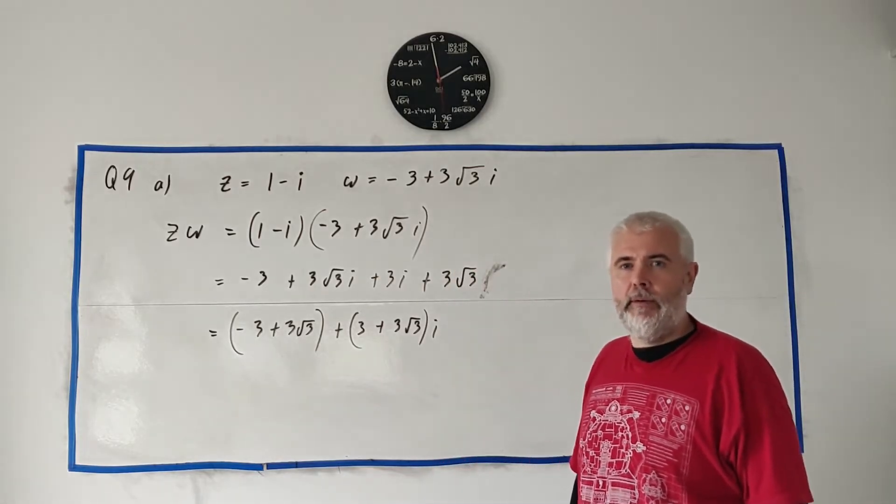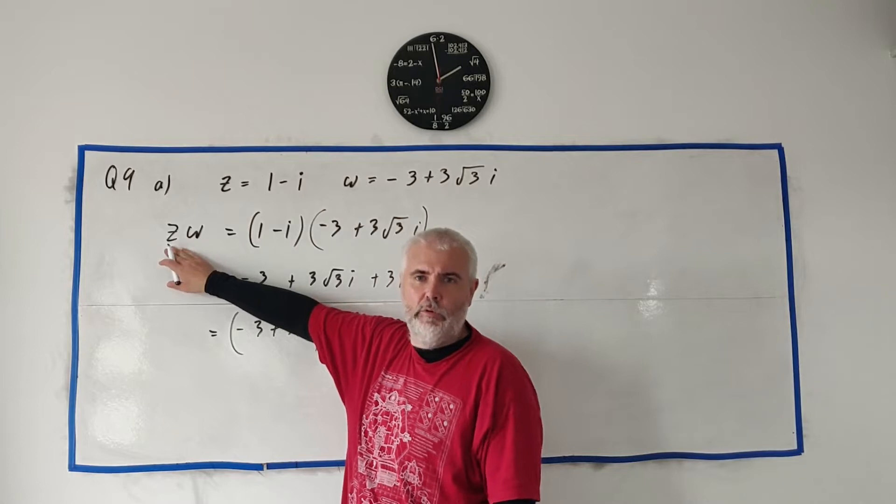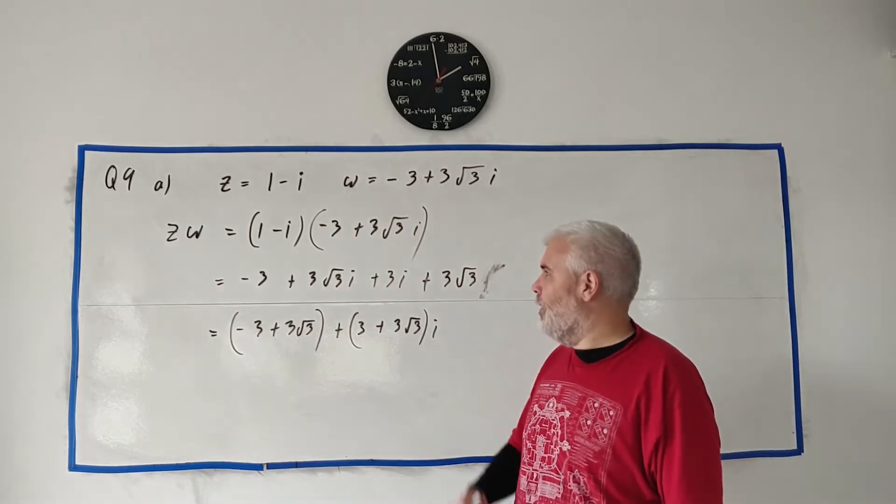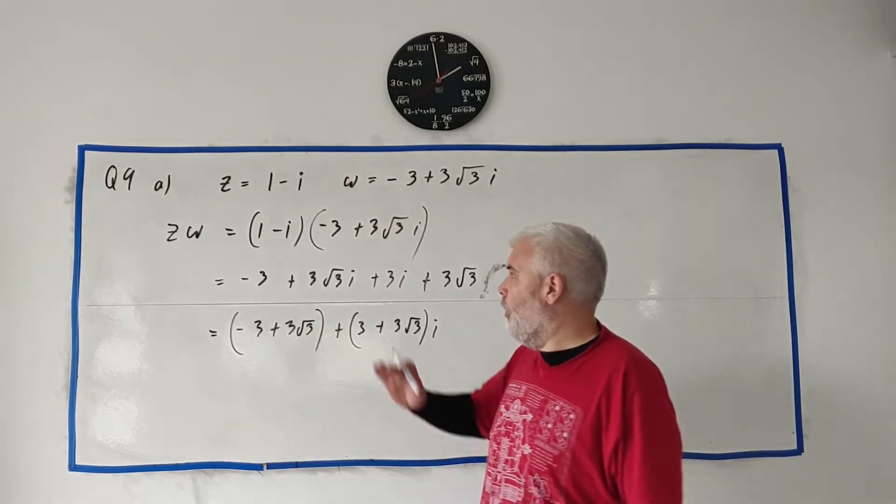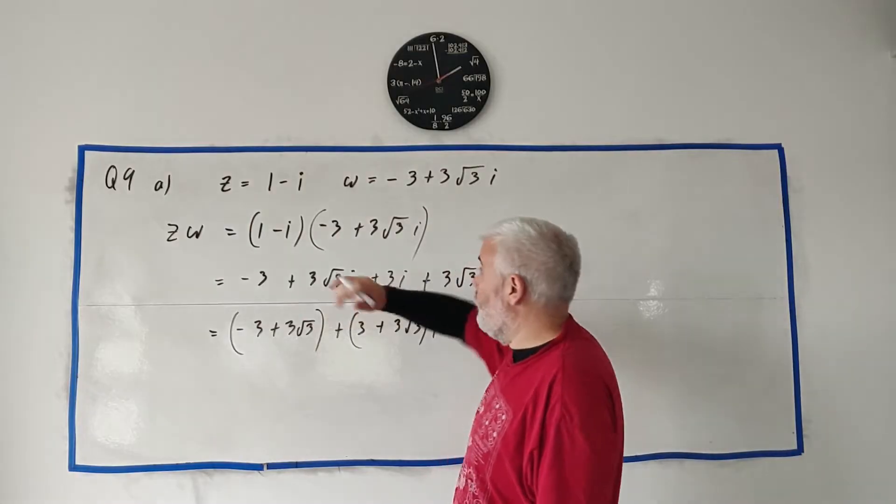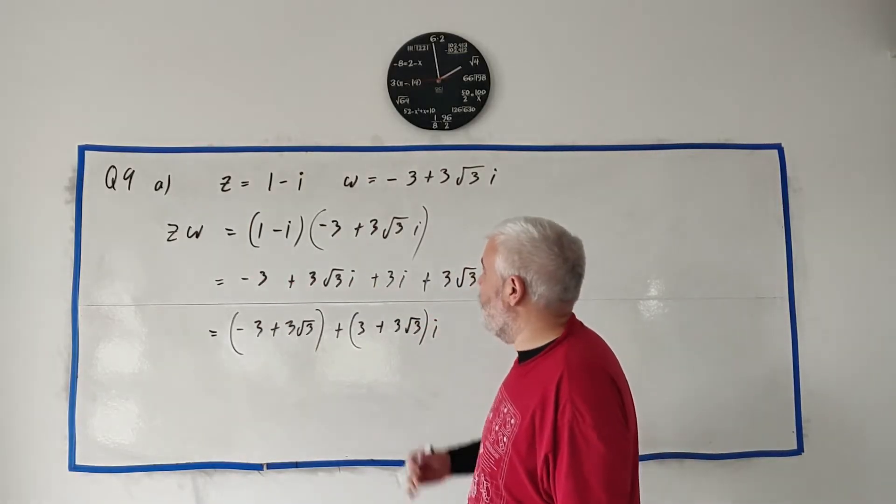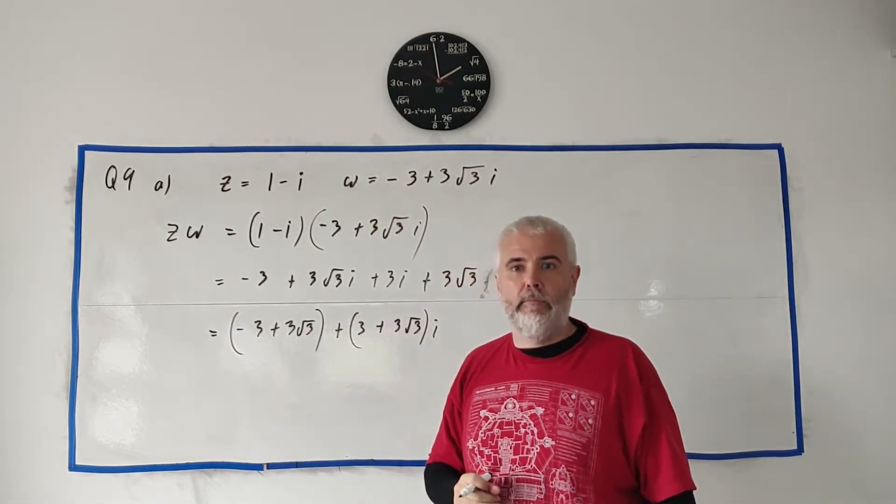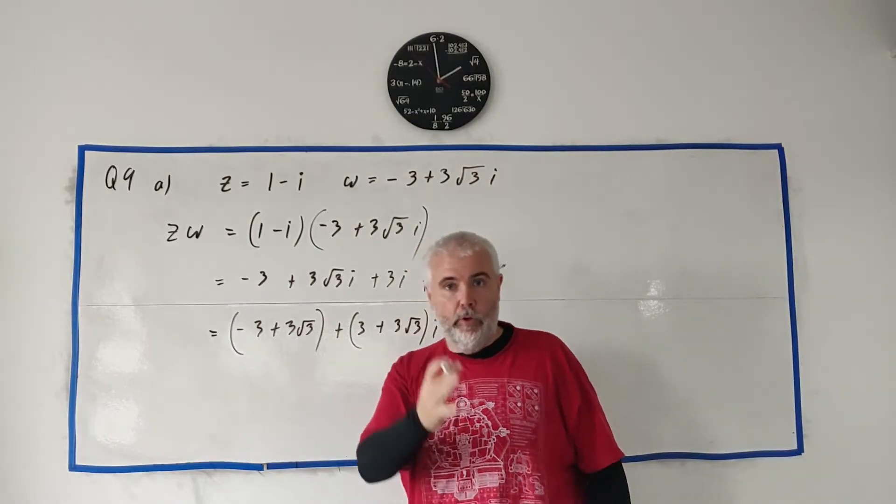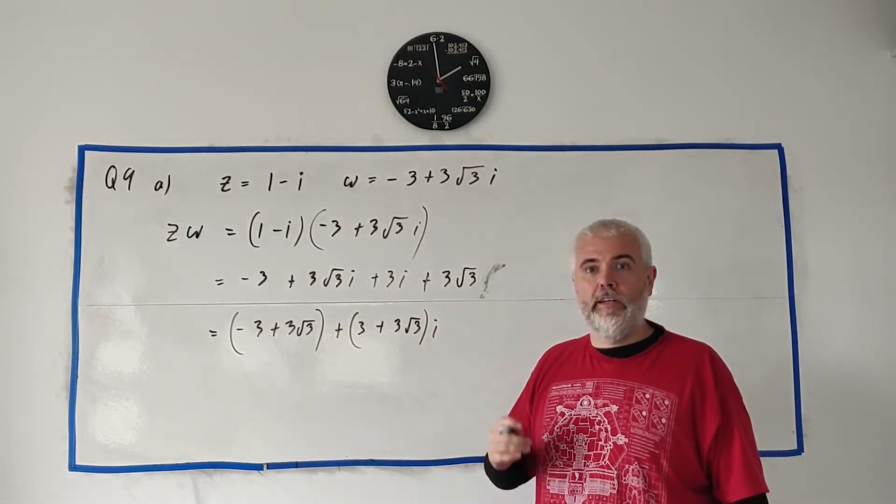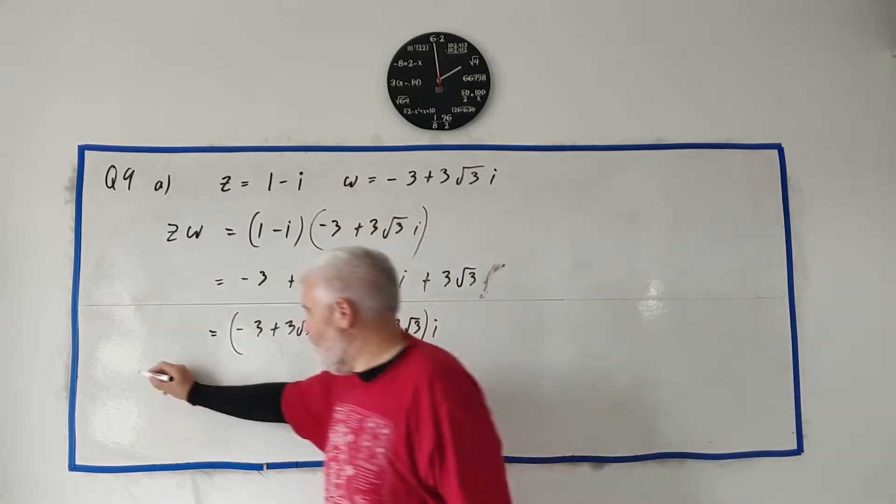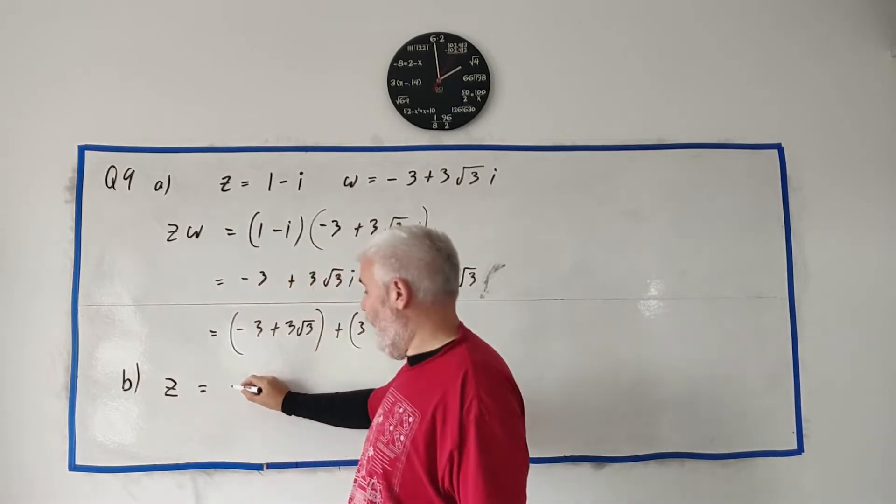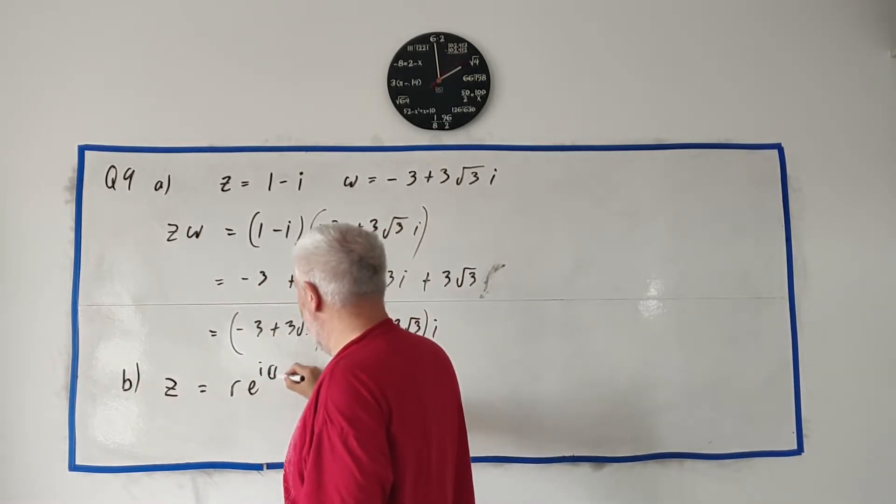Before I go, there is other ways to multiply these two. But we're actually going to deal with that in the next part, but really in part C and D. For part B, we have to turn these guys into polar form, or the form they're shown as here, r multiplied by e to the power of i theta.